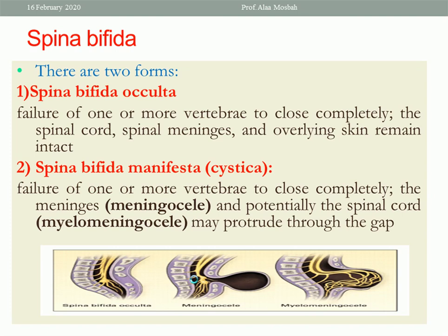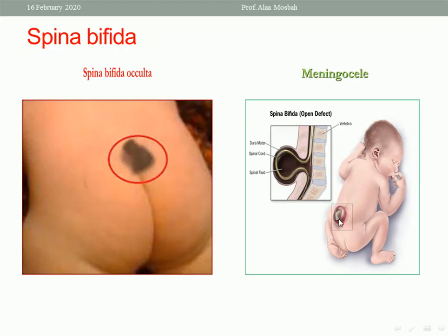Spina bifida includes two forms: spina bifida occulta and spina bifida manifesta or cystica. In spina bifida occulta, there is failure of one or more vertebrae to close completely, but the spinal cord, spinal meninges, and overlying skin remain intact — there is a defect but no herniation of the meninges. In spina bifida manifesta or cystica, the meninges and potentially the spinal cord may protrude through the gap. If meninges only herniate, it is called meningocele; if meninges and neural tissue herniate, it is called myelomeningocele.